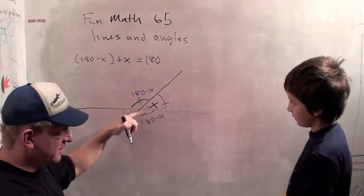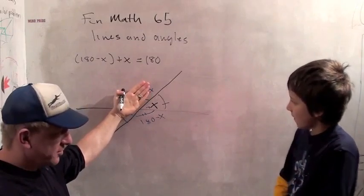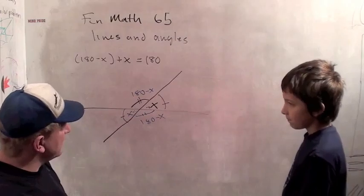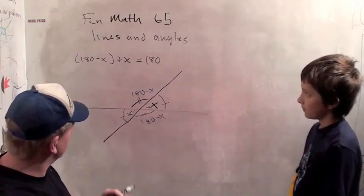That one's 180 minus x for both of the same reasons we talked about. One, it's an opposite angle. And two, it has to be to add up to 180 when you do it there. Okay? Yep. So that's a neat little simple geometric fact about intersecting lines.